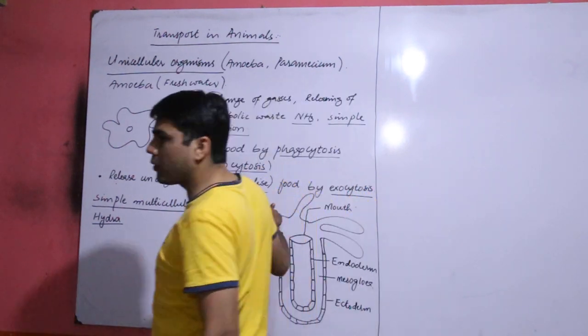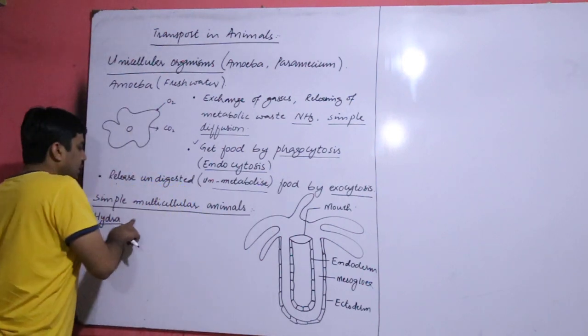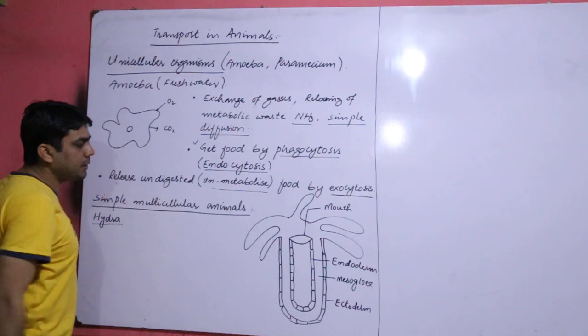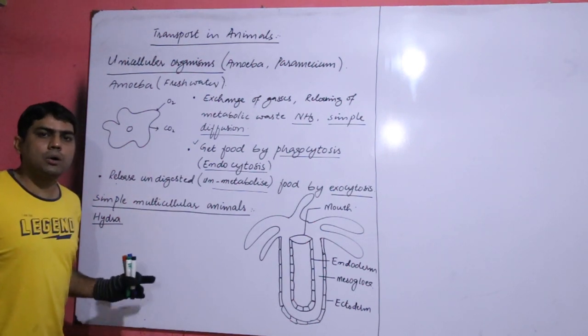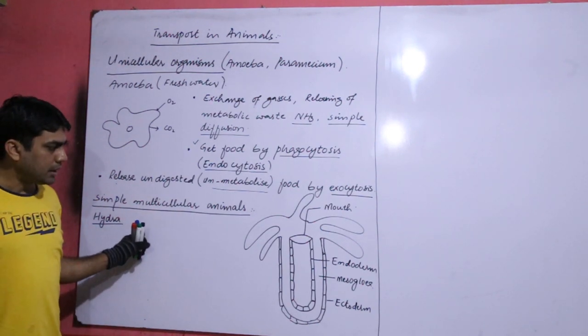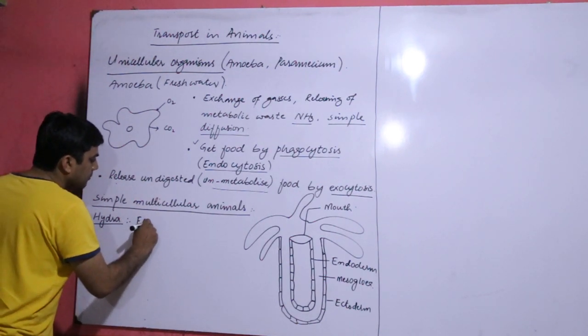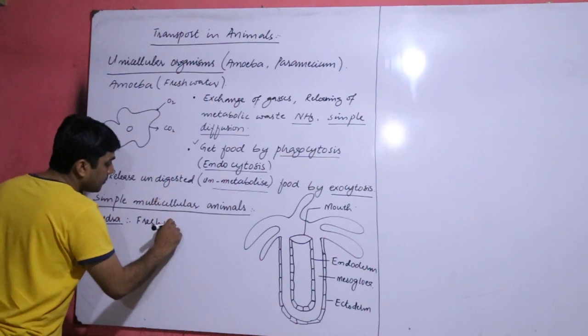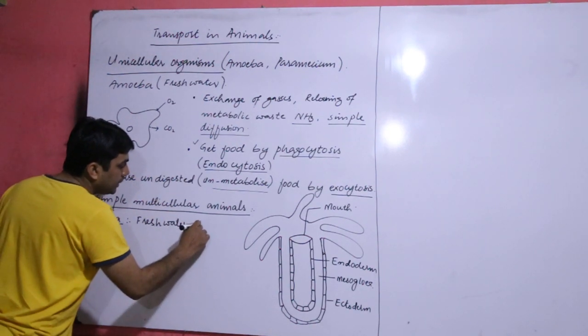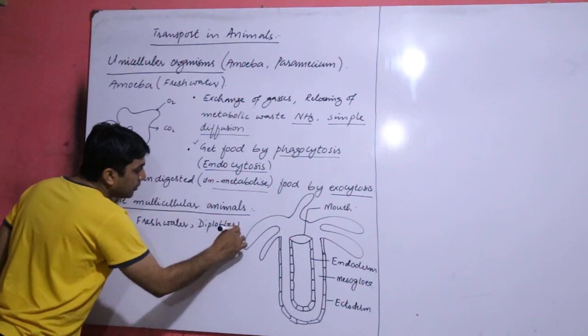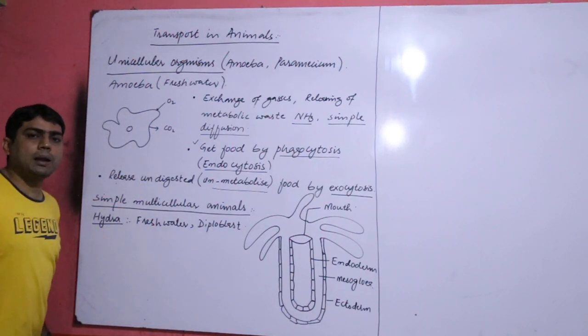Now we are going to discuss the simple multicellular organisms. First we are going to discuss hydra. Hydra is a simple multicellular organism. It lives in fresh water and it is diploblast. What is the meaning of diploblast?